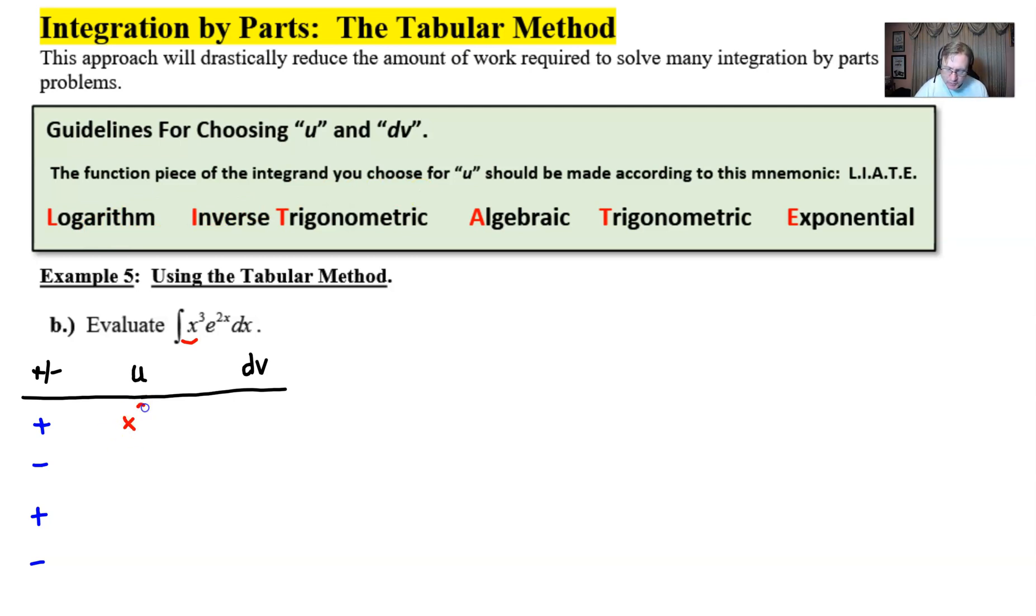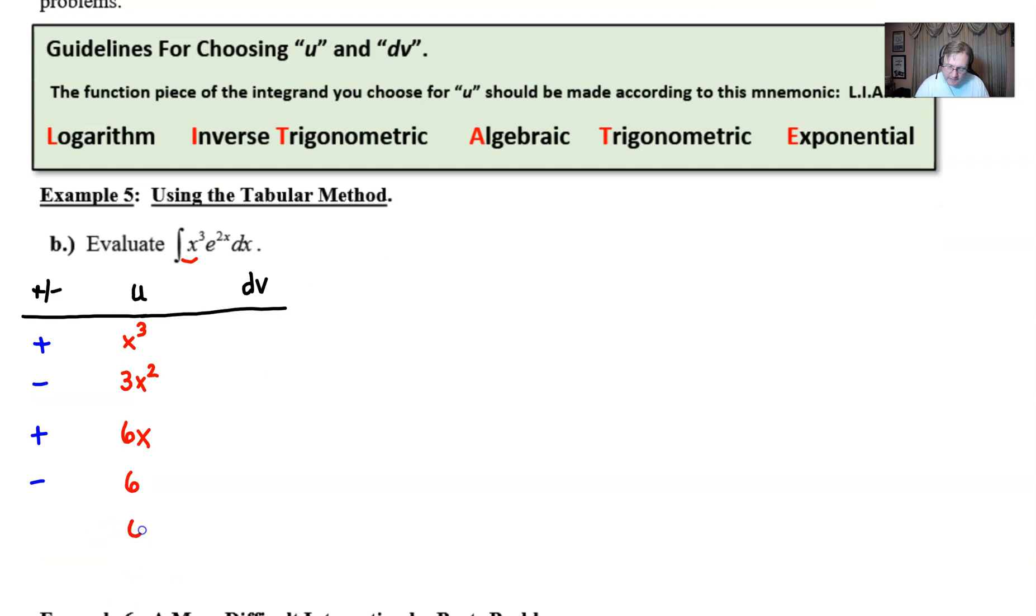We have this x cubed that we're going to put here and then we just continue to take derivatives until we get to zero. It turns out that we get to zero by going down to a fifth row. If you feel like you need to put a plus here go right ahead and do it. It turns out that row won't come into play regardless.